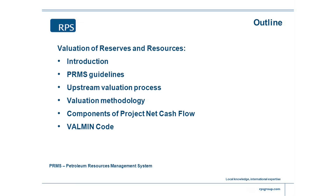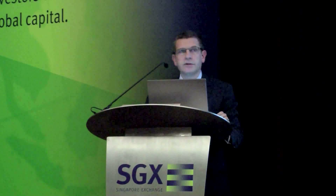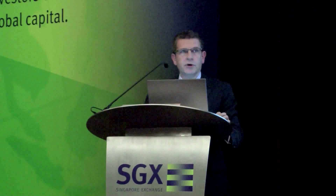I'm going to look at the components of the project net cash flow, and then conclude with what I call the Valmin Code — the valuation guidelines applied by ASX. I know they're applicable and used quite a lot around this region. I won't cover SEC regulations, COGI regulations in Canada, or UK regulations — I'm going to go through the Valmin Code itself.